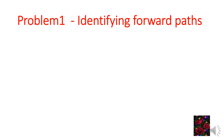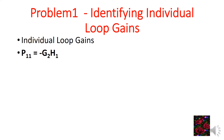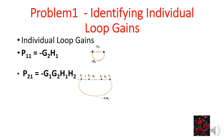Identifying forward paths: forward path F1 is equal to G1·G2. In this problem we have only one forward path, as indicated in this diagram. Identifying individual loop gains: the first individual loop gain P11 is equal to minus G2·H1. The second individual loop gain P21 is equal to minus G1·G2·H1·H2. Both individual loop gains are identified here.